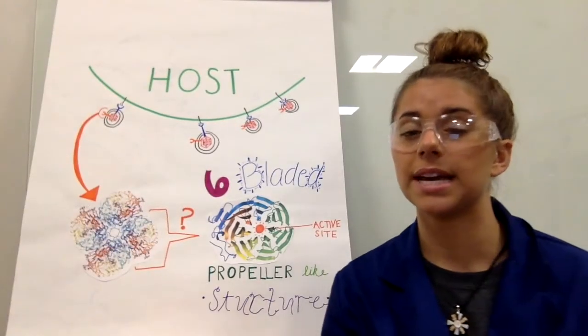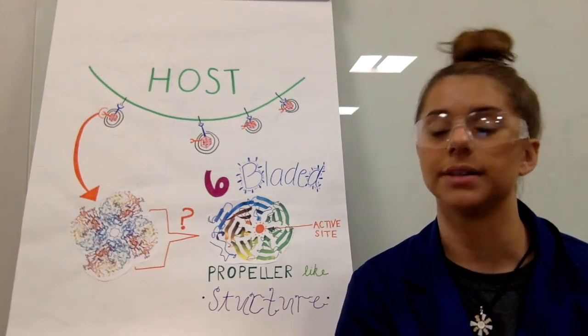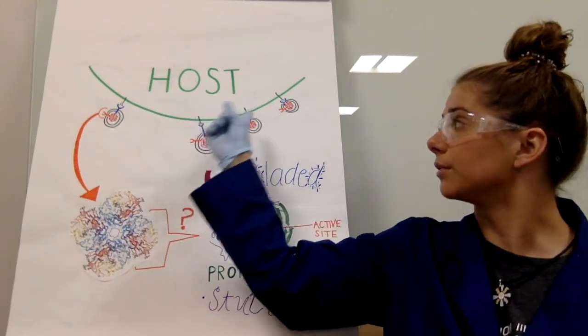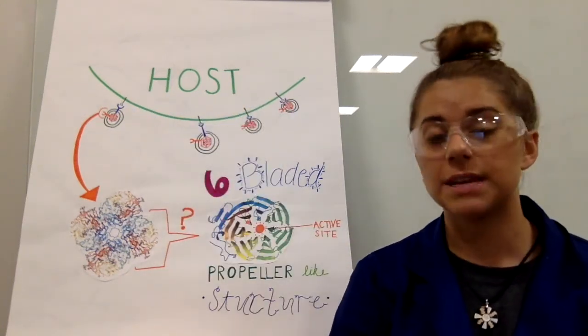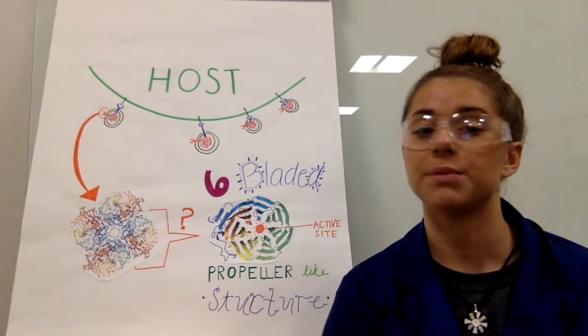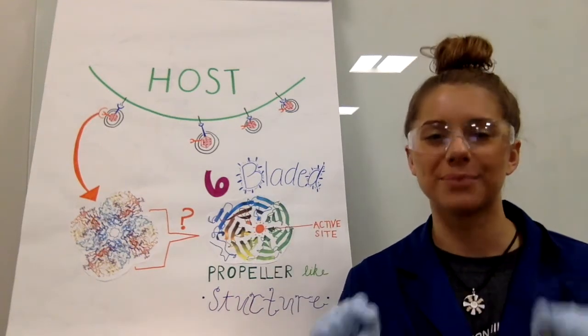After the virus has replicated, it exits the host cell. However, because there are still hemagglutinin and neuraminidase proteins on the virus's surface, the virus is still bound to the cell due to the hemagglutinin and sialic acid bond. Neuraminidase enables the virus to be released from the host cell. Finally, neuraminidase has its big role.